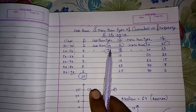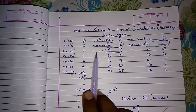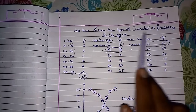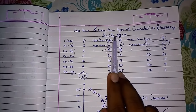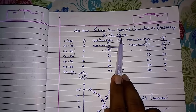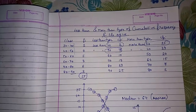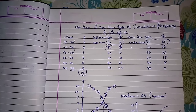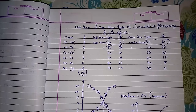So this way you can find out the less than type and more than type of cumulative frequency and ogive. If you like my video, please subscribe to my channel so that I can bring more such videos for you. Thank you so much for watching.